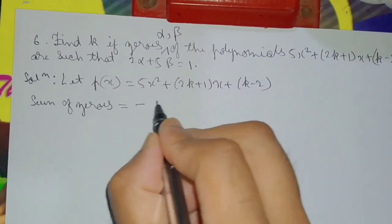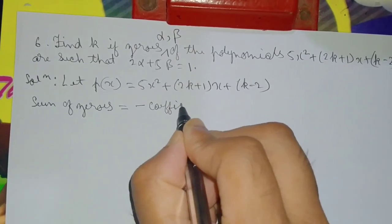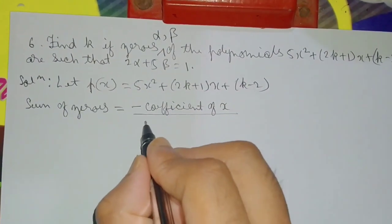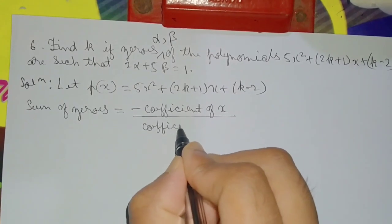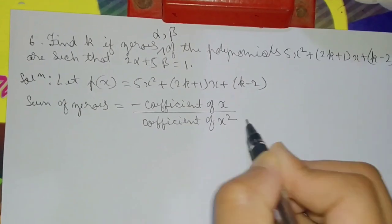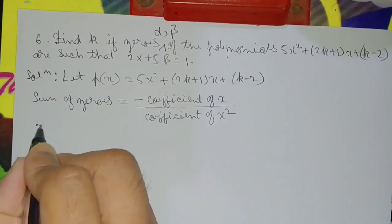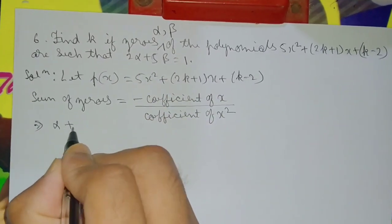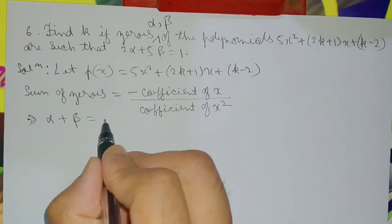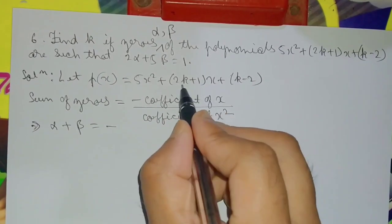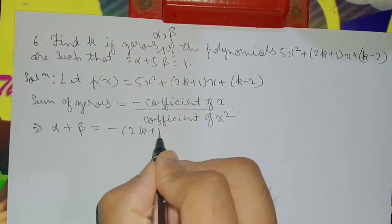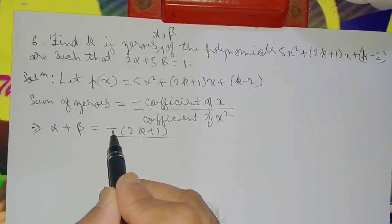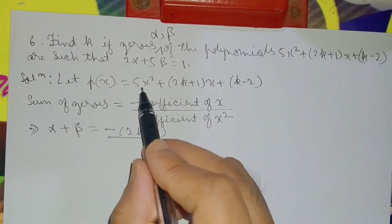Sum of zeros is equal to minus coefficient of x divided by coefficient of x squared. So alpha plus beta is equal to minus (2k plus 1) divided by the coefficient of x squared, which is 5.